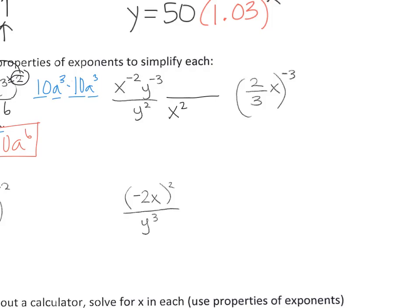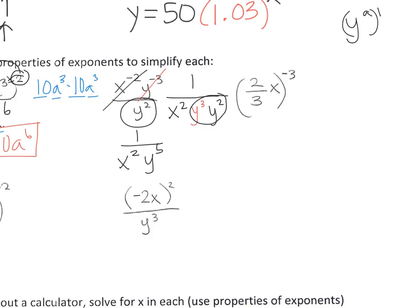Over here, when you have negative exponents, you need to switch where they are — numerator and denominator — and make them positive. So x to the negative 2 is in the numerator; that turns into x squared in the denominator. Y to the negative 3 is in the numerator; this turns into y to positive 3 in the numerator. This y squared doesn't have a negative exponent, so it just stays. You have nothing on top, so you need to put a 1 on the top. Now you have 1 over x squared, and the y's combine to y to the 5th — you add the exponents. If you have y to the a times y to the b, you add the exponents.